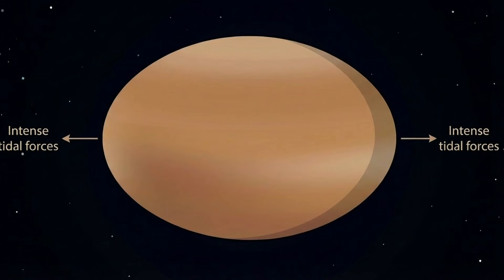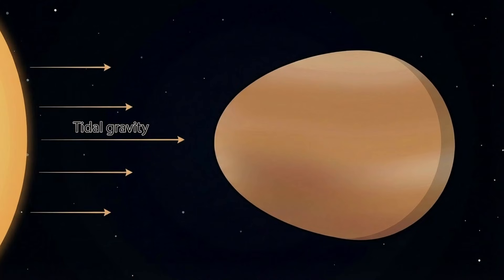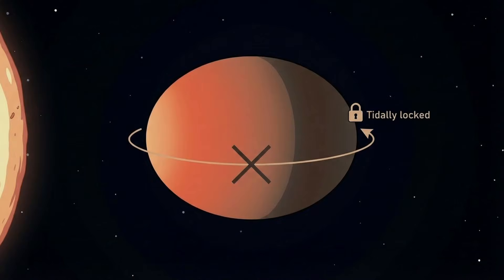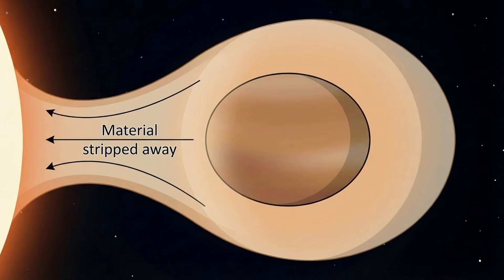The planet's proximity also creates intense tidal forces. WASP-12b is no longer spherical. It is stretched into an elongated, egg-like shape, pulled toward its star by gravity. One side permanently faces the star, locked in place. There is no rotation to distribute heat. No nighttime cooling. The atmosphere swells further, making it even easier for the star to strip material away.